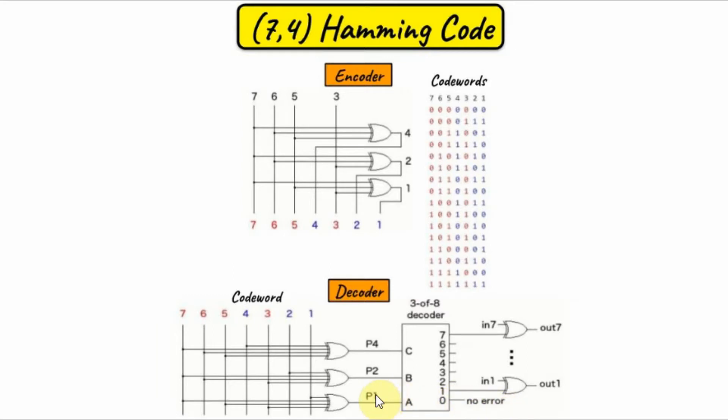If we had a non-zero value, it means we have an error in a particular digit. So, let's say the non-zero value was 1, 0, 0. It means this output 1 of the decoder is enabled, implying that digit 1 is an error, which needs to be flipped by using this exclusive or gate.